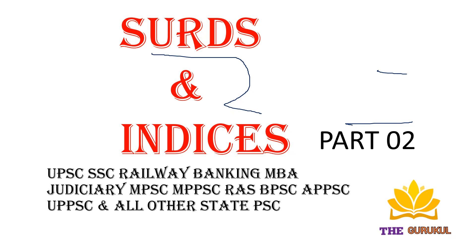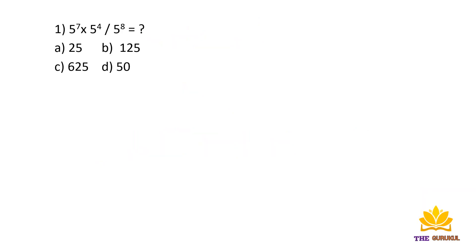Okay, so let's see. Here's our question: 5 raised to 7 times 5 raised to 4 divided by 5 to the power 8. First of all, we have a formula: a raised to m times a raised to n equals a raised to m plus n.